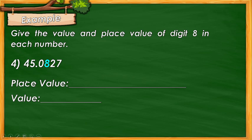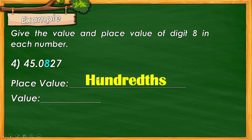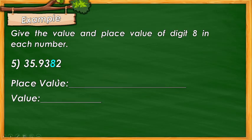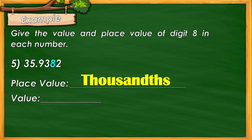Example number 4: identify the place value of digit 8 — correct, the answer is hundredths place. Therefore, since it is in the hundredths place, the answer is 8 hundredths or 0.08. Example number 5: identify the place value of digit 8 — the place value of digit 8 is in the thousandths place. Therefore, we have 8 thousandths or 0.008.